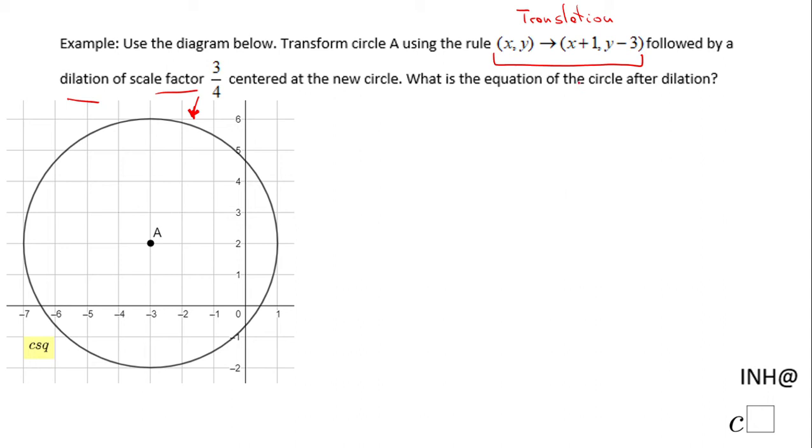For finding the equation of this circle, obviously we need to find the center of the new circle and the radius. For that reason we look into these two transformations: one is rigid transformation, the translation, and the other one is the non-rigid transformation, dilation by a scale factor 3/4.